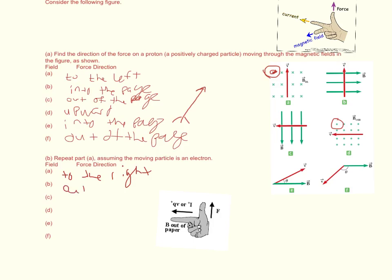So B would be out of the page. C would be into the page. You can see why I usually type. D would be down, E would be out of the page, and then F would be into the page.